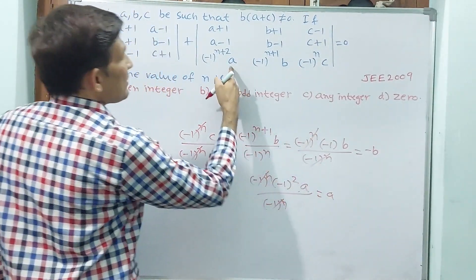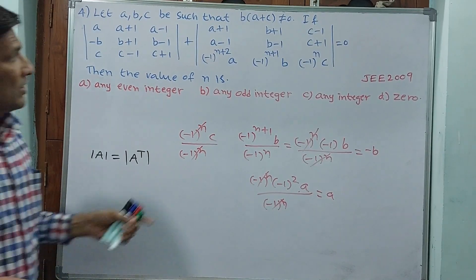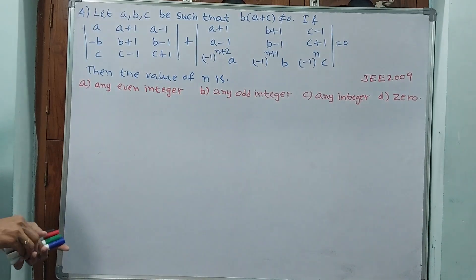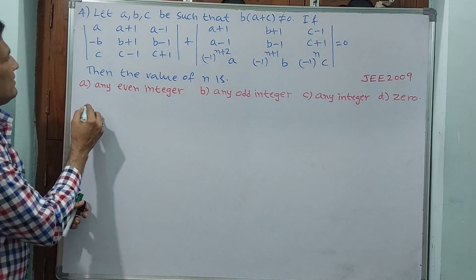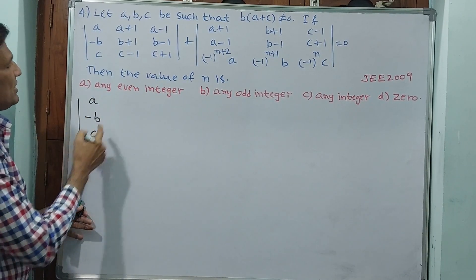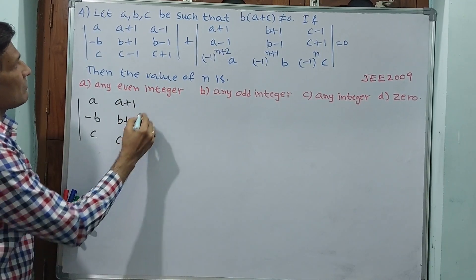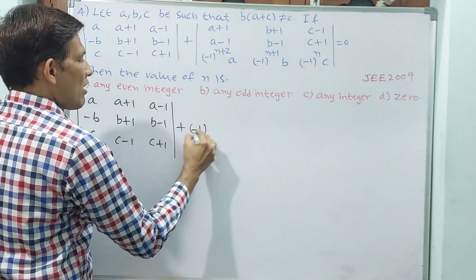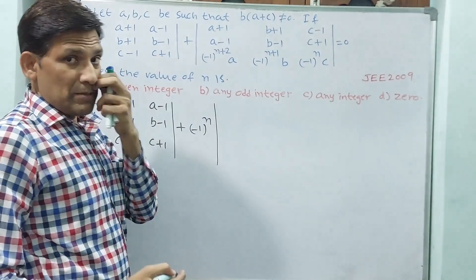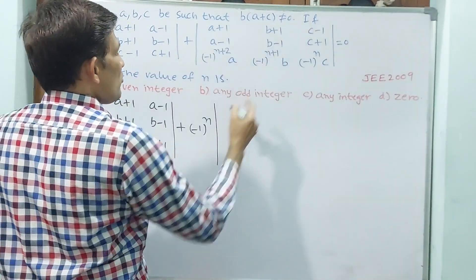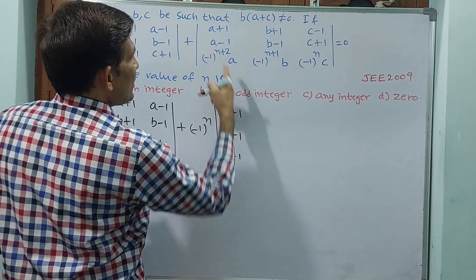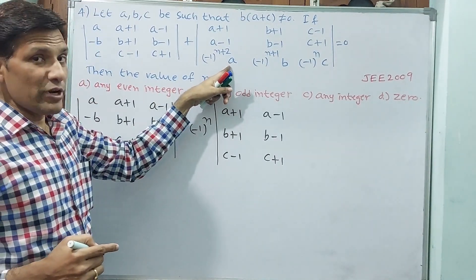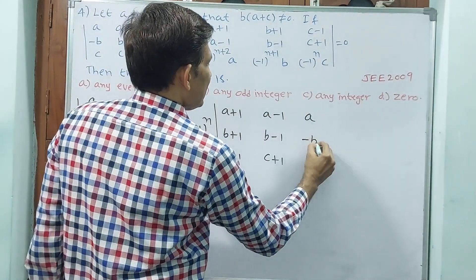Minus 1 squared means plus, so A will come there. Now I am transposing. Let me write the first determinant — A, −B, C: no change for rows A+1, B+1, C−1 and A−1, B−1, C+1. Plus (−1)^n taken outside common. Now transposing: first row becomes first column — A+1, B+1, C−1; second row A−1, B−1, C+1; third row becomes +A, −B, +C.